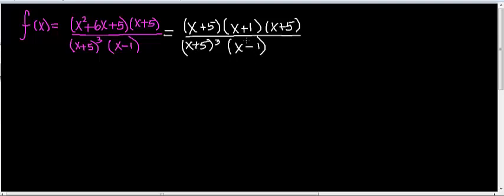Without doing anything at all, I already know I have a vertical asymptote at x equals 1. I also know I have another vertical asymptote at x equals negative 5. How do I know that? Because I have common factors in the numerator and denominator — x plus 5 appears in both the numerator and the denominator.